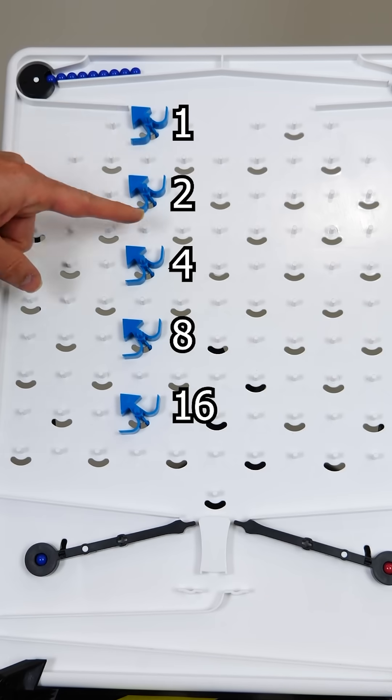These blue arrows are called bits. When the blue arrow points to the right, it's on, and when it points to the left, it's off.